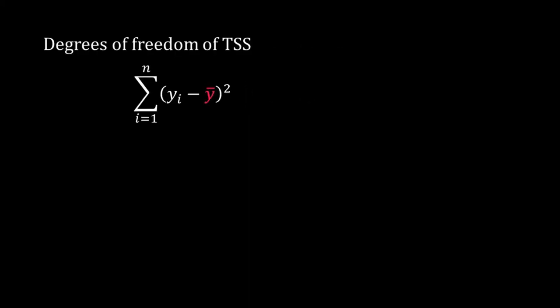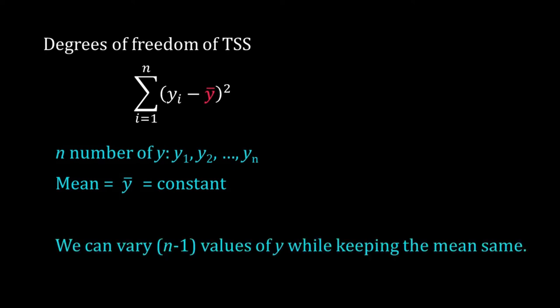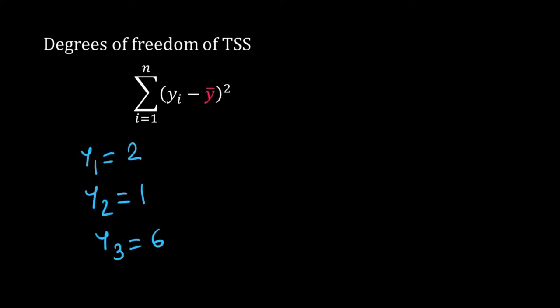Now the degrees of freedom of TSS. In TSS we are taking the square of the deviation of each y from the mean y. Suppose I have n number of y and I have fixed the mean to y bar. Then I can vary n minus 1 values of y while keeping the mean same. Let me explain. Suppose we have three y's: y1 equal to 2, y2 equal to 1 and y3 equal to 6. So the mean y is 3.